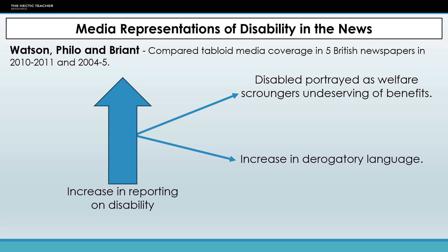Whereas the broadsheet newspapers are almost ignoring disability, the tabloid newspapers see disabled people as a scapegoat — suggesting they don't deserve their benefits, that they are a sponge on society. With this comes that rise in derogatory language and misunderstanding of disability.